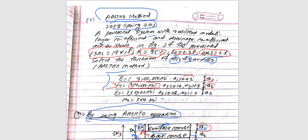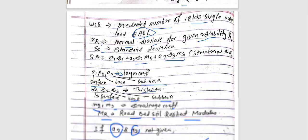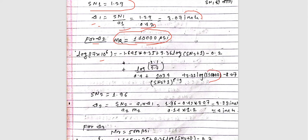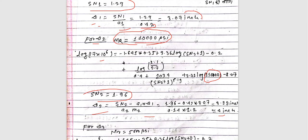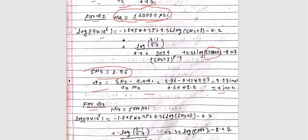This is used for D2, and we will find SN. We get the answer, adjust it, and this gives S2. The answer gives S2 and D2. We then put D3, using a subbase resilient modulus of 500 psi to find the D3 value.